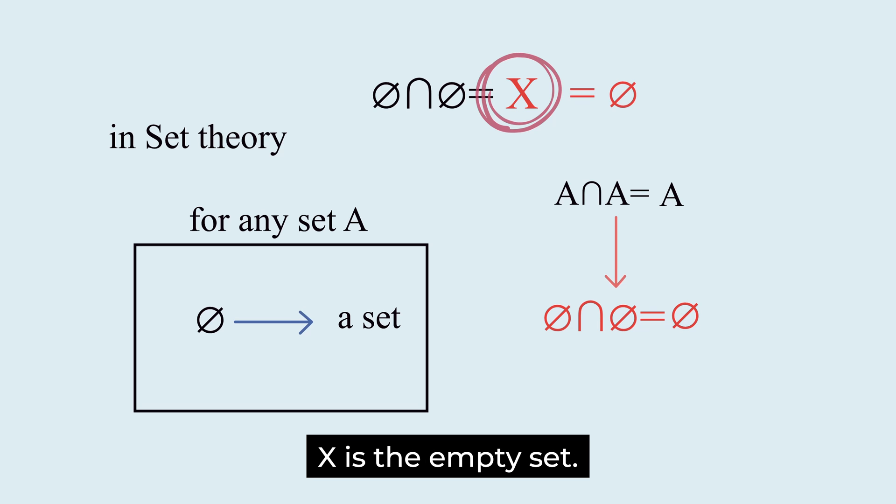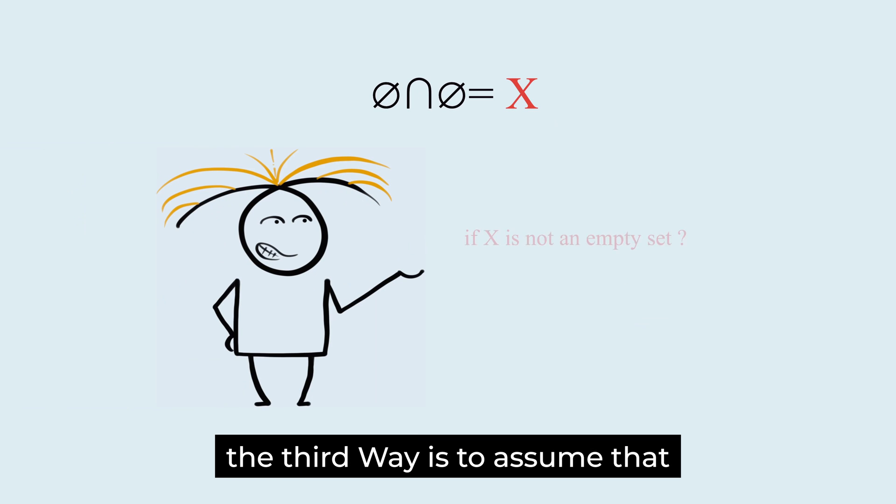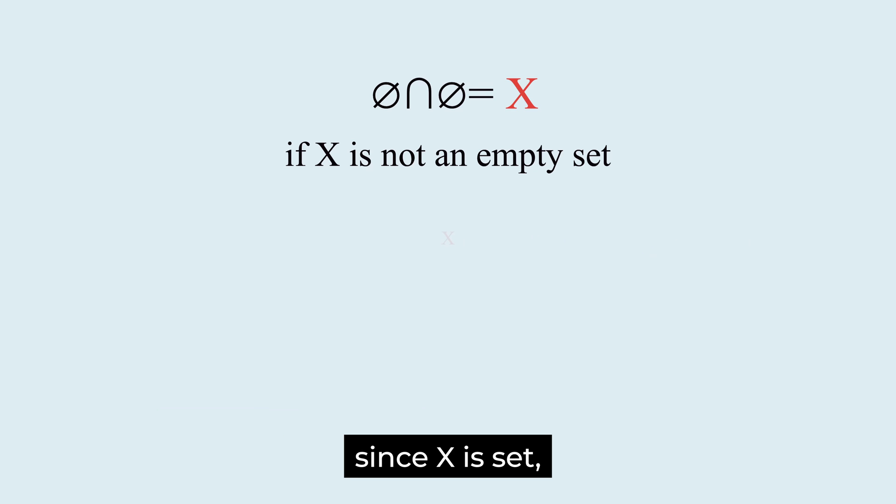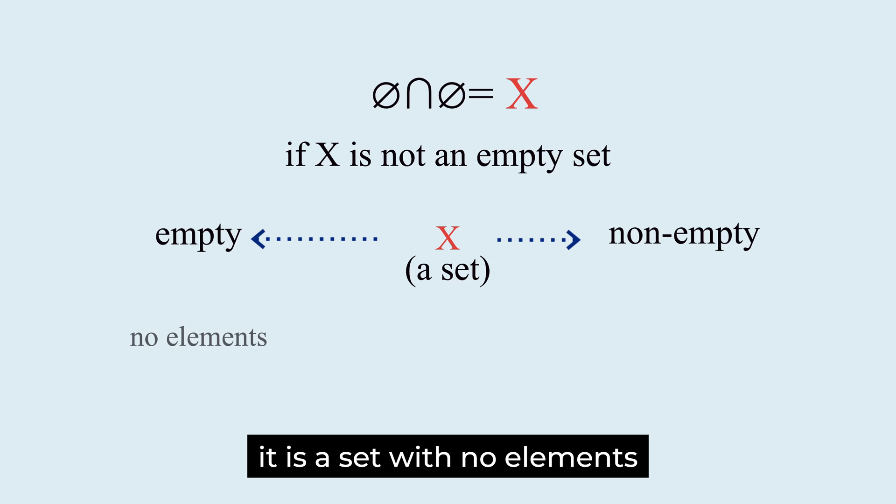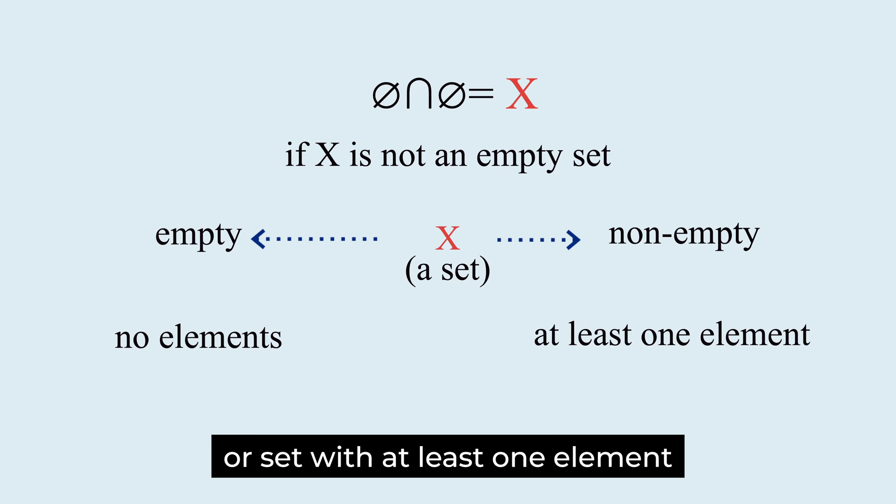The third way is to assume that X is not an empty set. Since X is a set, it must be either empty or non-empty. It is a set with no elements or a set with at least one element.